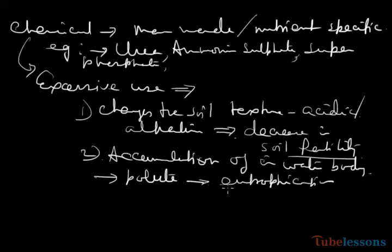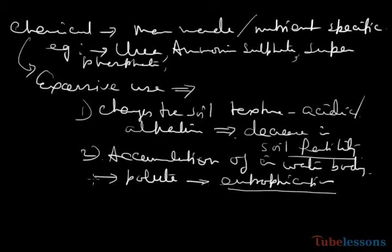Eutrophication is the process by which a water body gets polluted and aquatic organisms present in that water body are destroyed. Today we have discussed how to improve soil fertility by using manures, by rotation of crops, and by allowing fields to lie fallow. Thank you.